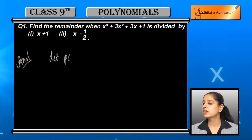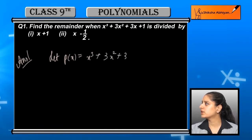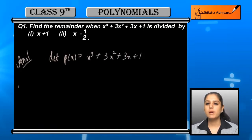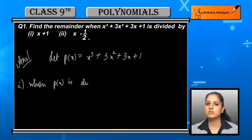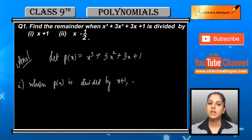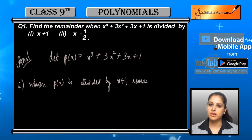Let the polynomial be p(x) which is equal to x³ + 3x² + 3x + 1. In the first part, if the linear polynomial is x + 1, we'll divide p(x) by it.